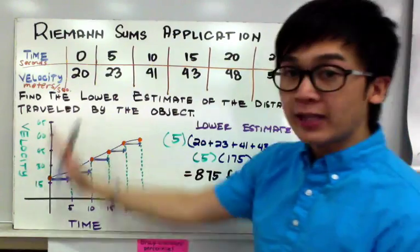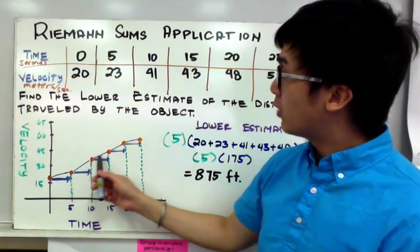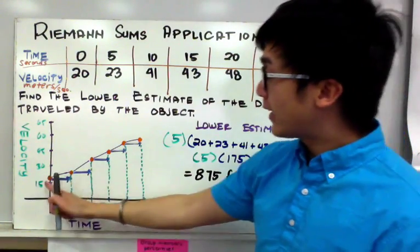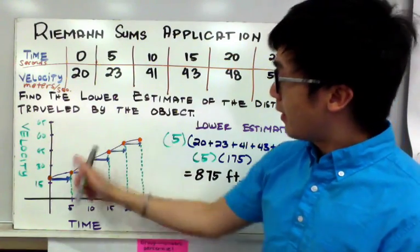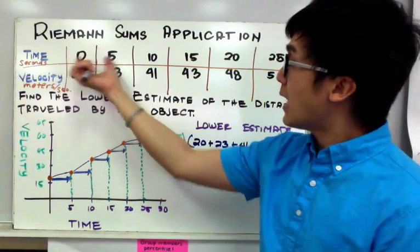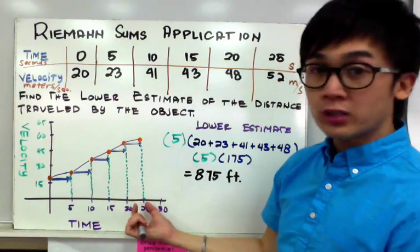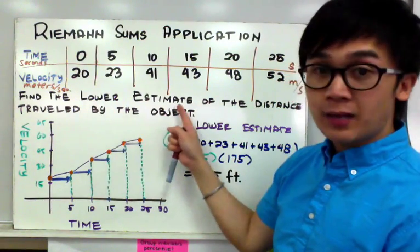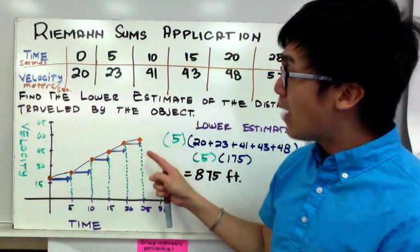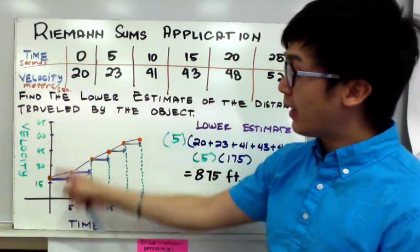If you graph your table into an xy-plane where time is your x-axis and velocity is your y-axis, you will notice that velocity is increasing as time is increasing. At each endpoint we can construct a rectangle. Our rectangle has a consistent width because the time interval is consistent at 5 seconds, so we can have a width of 5 seconds in our approximated rectangles.